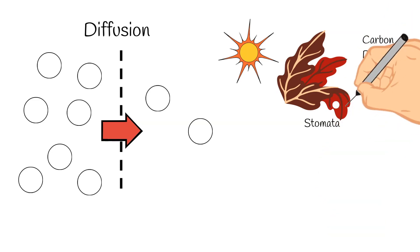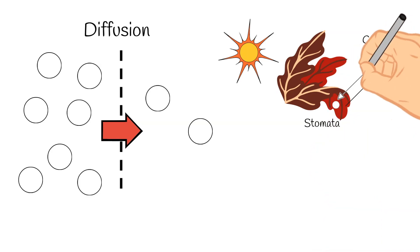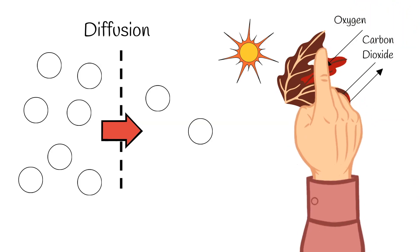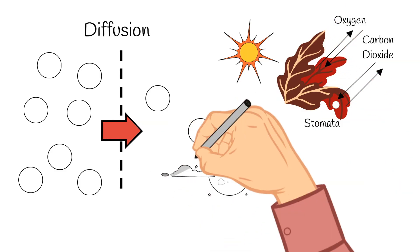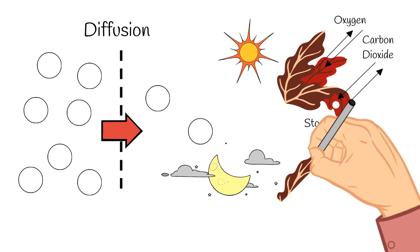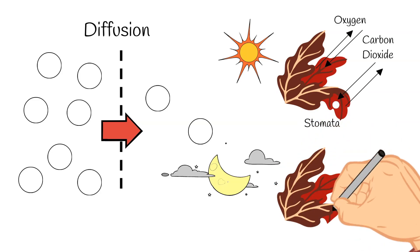So like I said, in daylight, plants are both respiring and photosynthesizing. So oxygen and carbon dioxide are diffusing in and out of the leaves during the day. But overnight, when there's no sun, that photosynthesis stops and the stomata close. So during this time, just respiration takes place and only oxygen diffuses into the leaves and only carbon dioxide diffuses out.